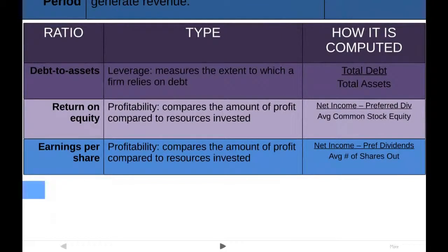The next ratio is a profitability ratio: return on equity. This simply tells you how well a firm is generating returns on the equity it's been provided — what kind of return it generates for investors. A simple way to calculate it is to take net income, factor out preferred dividends if the company has them, and divide by the average common stock's equity, which you can find on the balance sheet. This tells you how well a company manages equity and how well it does at producing profit from the equity invested by owners or shareholders.